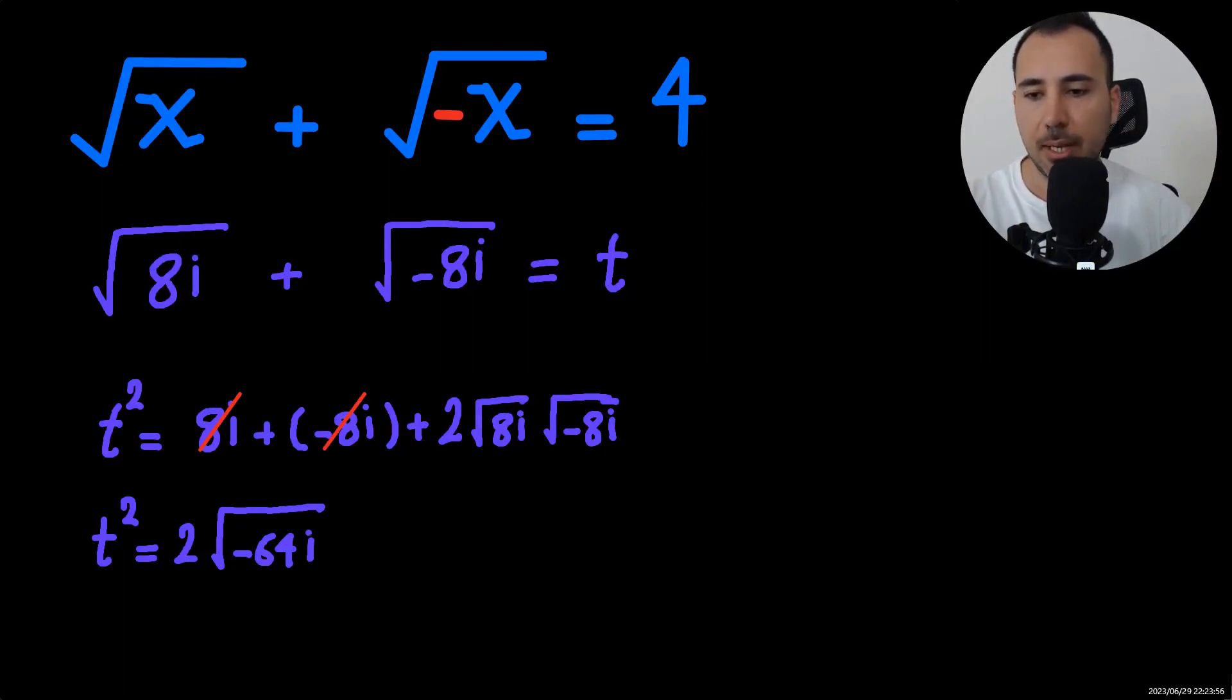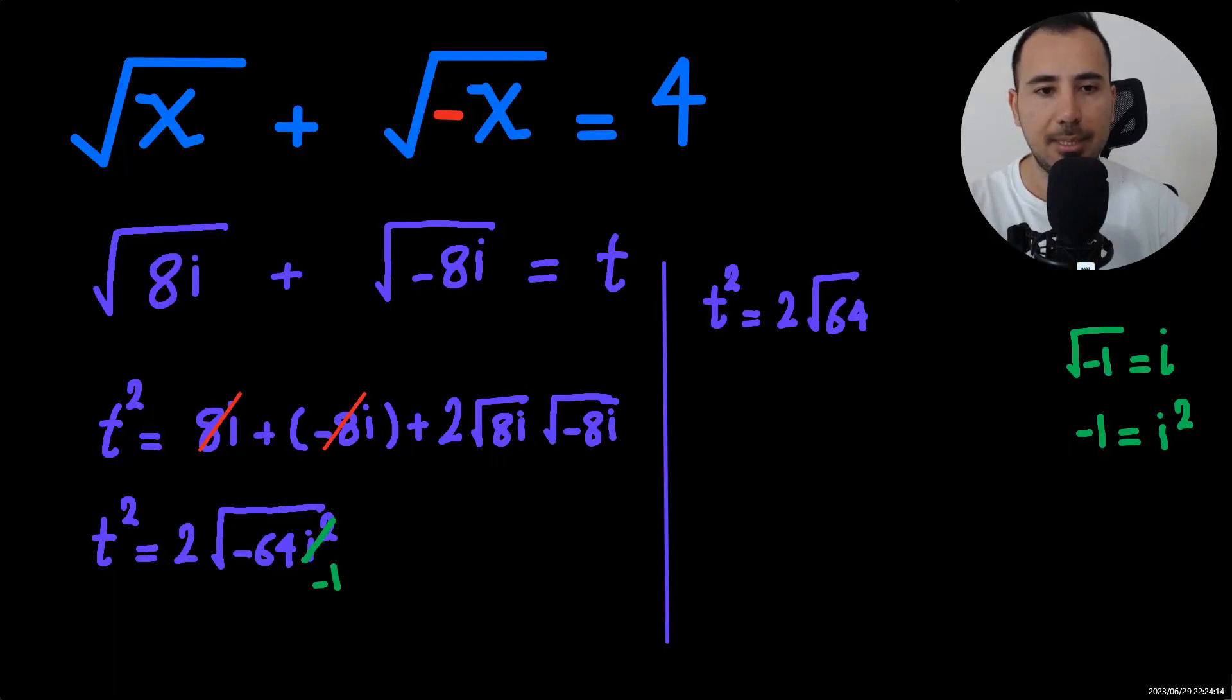All of this under radical. So let's just check the definition. We just know that square root of negative 1 is i. So i squared is negative 1. So let's just go and replace that value. What we're going to get is t squared will be 2 times 64.